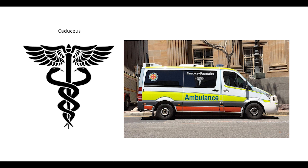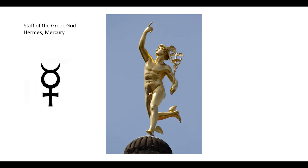The caduceus is actually the staff of Hermes — Hermes Trismegistus — and Hermes is also known as Mercury, the Greek god. I'm talking about Mercury as an archetype. This is a statue of the Greek god Hermes, and that is the glyph for Mercury. Mercury and Hermes represent many things like commerce, negotiation, trade, exchange, trickery, thieves, borders, travel, and crossroads.